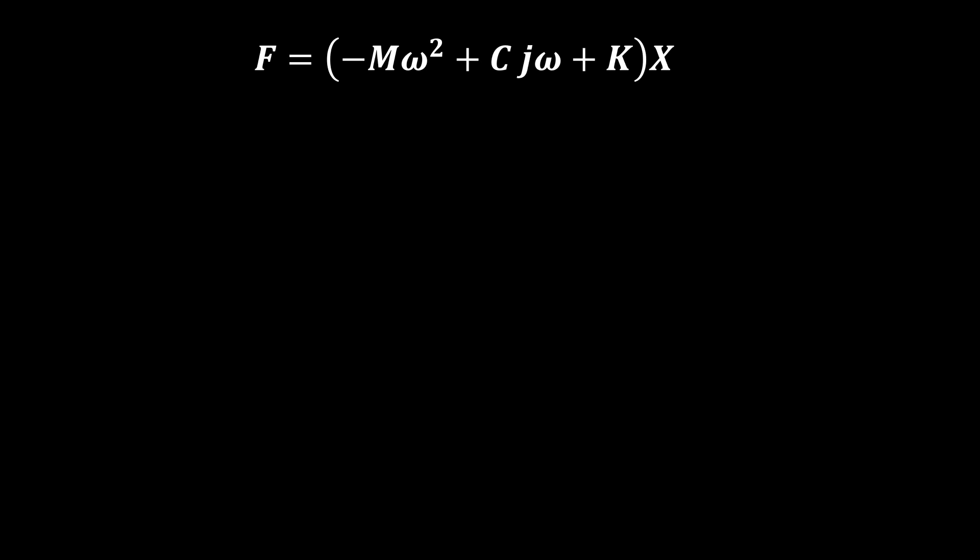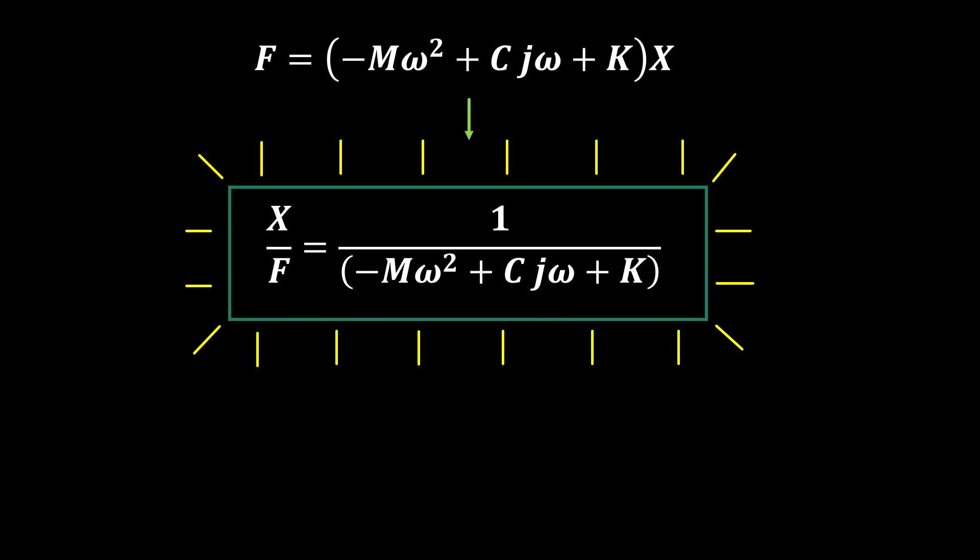If we go back to our equation, I have it right here as we left it. Now that we know an FRF is an output over an input, I can do that final manipulation. X is the output, F is the input, and if we rearrange, we get our final equation. And I'm going to celebrate this because this actually is our final equation. We call this equation Receptance or Compliance. There are many different types of FRFs, but this is the most basic one. It's the one we're going to focus on.